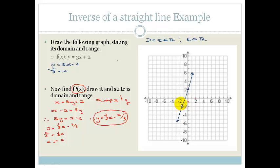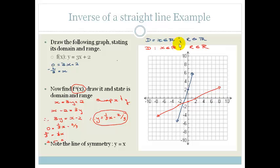Notice that the x and y values are swapped, even for the intercepts. The original f(x) had a y-intercept of 2 — now the x-intercept is 2. The original x-intercept was −2/3 — now the y-intercept is −2/3. The domain and range haven't changed because it's still a straight line: both are elements of real values. Notice that the line of symmetry is y = x, which makes sense because we just swapped x's and y's and solved for y.